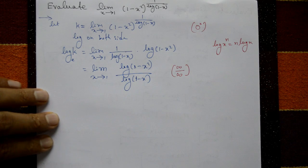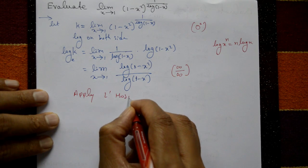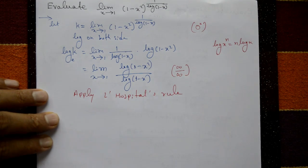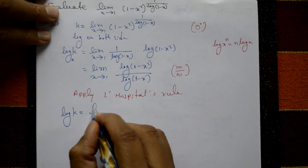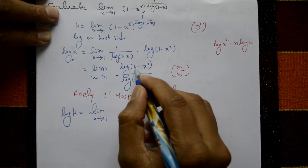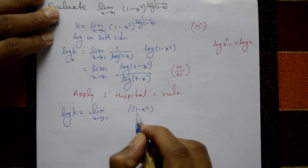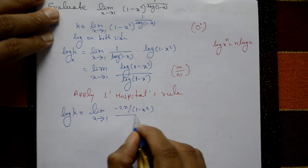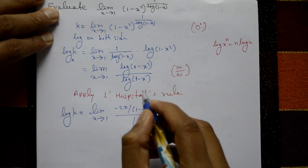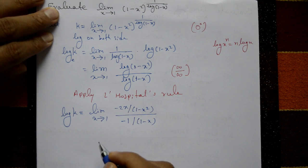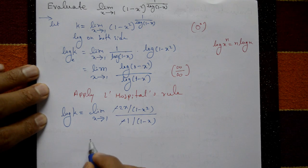Since the form is infinity by infinity, applying L'Hôpital's rule: differentiate numerator and denominator separately. The derivative of log(1 minus x squared) is 1 upon (1 minus x squared) times (minus 2x). The derivative of log(1 minus x) is 1 upon (1 minus x) times (minus 1).